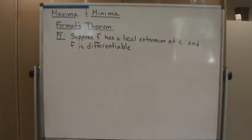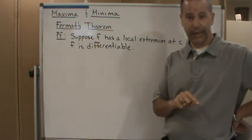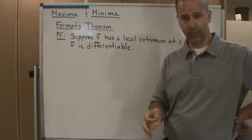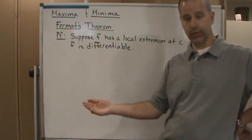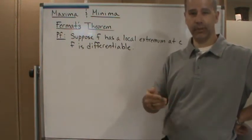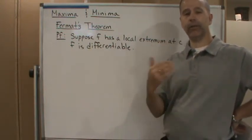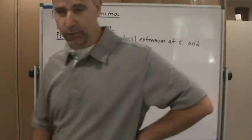To do this, we're going to show that f prime of c is greater than or equal to zero, and f prime of c is less than or equal to zero. If we could show that f prime of c is less than or equal to zero and we show that f prime of c is greater than or equal to zero, then that would mean that f prime of c would have to equal zero. That's the only way it could be both less than or equal to and greater than or equal to zero.